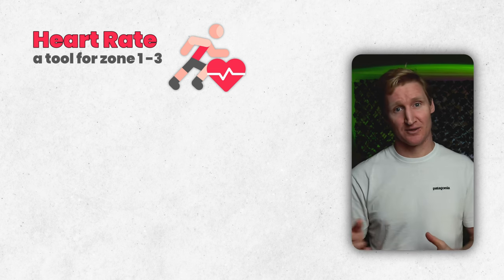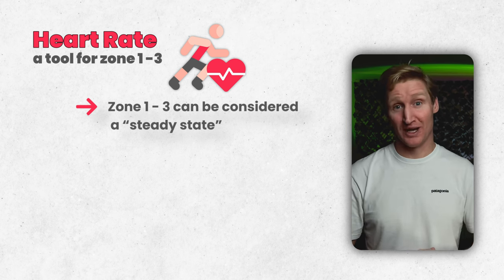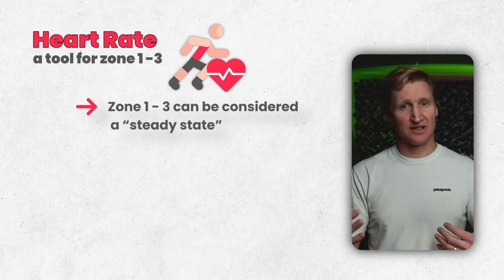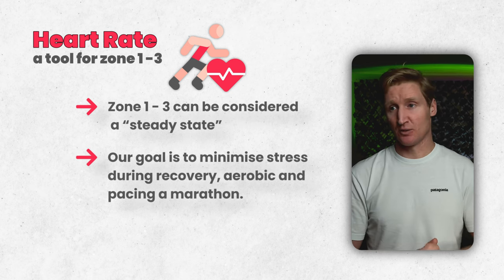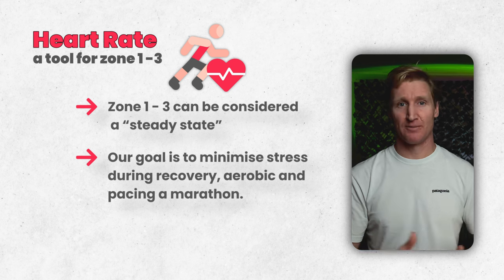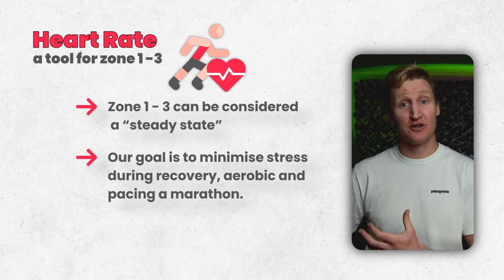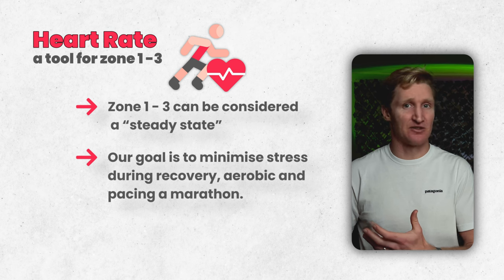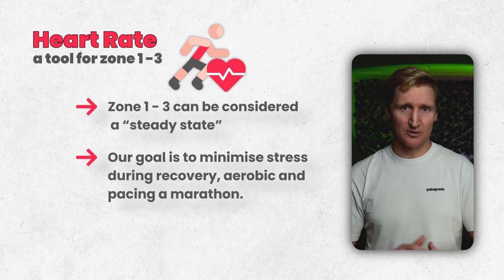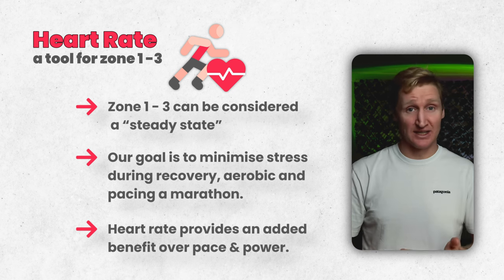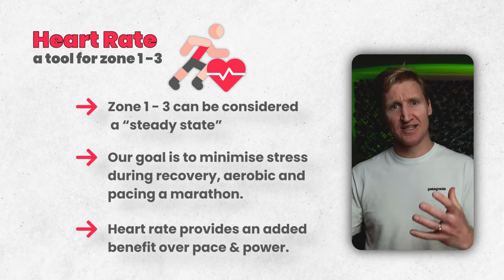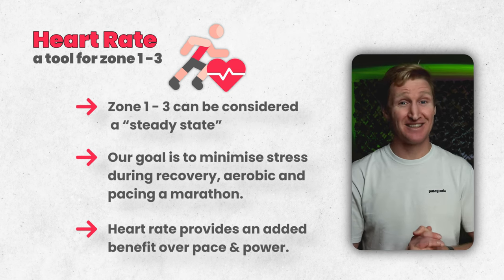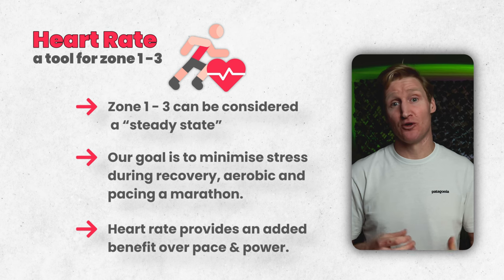Let's start with heart rate. Heart rate is the tool I'm going to be utilizing in zones one to three. I consider heart rate the dial-up broadband of metrics — it does well with the slow steady state of information but doesn't do so well with fast rates of change. Zones one to three are typically about reducing stress, whether that's a zone two run maximizing aerobic capacity and minimizing carbohydrate use, or a zone one easy recovery run. It could also be the start of a marathon where we want to account for altitude, temperature, humidity, and terrain — we want a ceiling so we're not going out too hard. Heart rate gives us the best indication of physiological internal metabolic load.